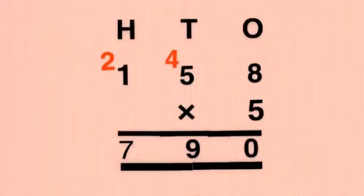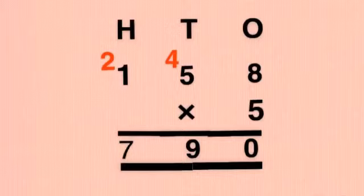Then multiply 5 by 5, which equals 25. Add the carry: 25 plus 4 equals 29. We write 9 in the tens column and carry 2.